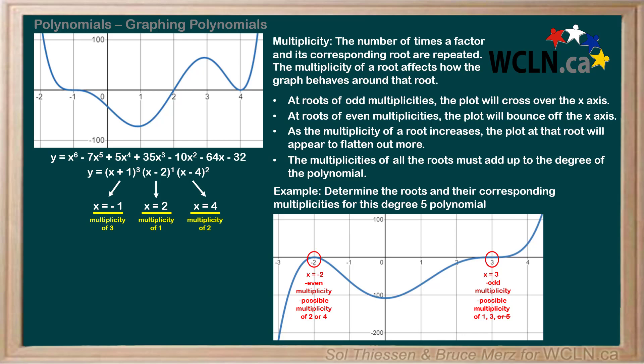From here, to determine the correct multiplicities, we must observe that the plot appears flat around the root at x equals 3, and recall that as the multiplicity of a root increases, the plot at that root will appear to flatten out more. This suggests that the root at x equals 3 has a multiplicity of 3 instead of 1.